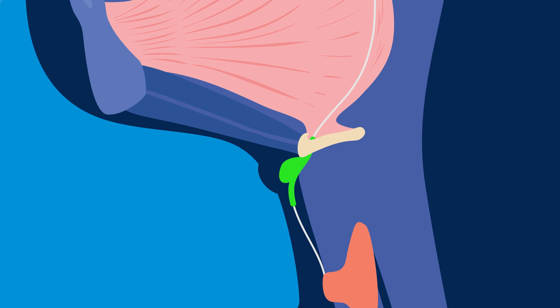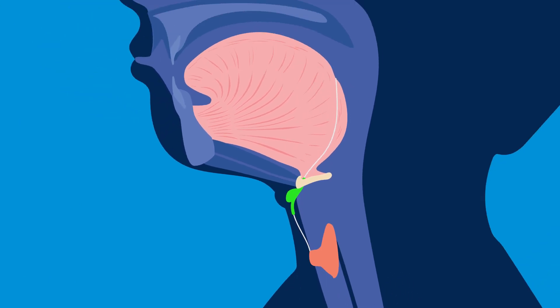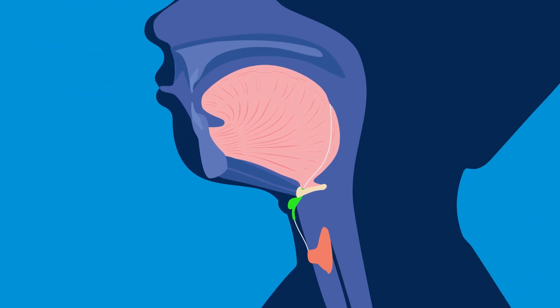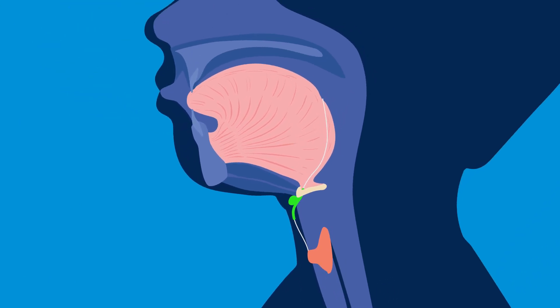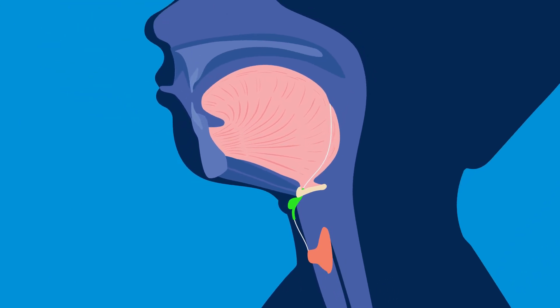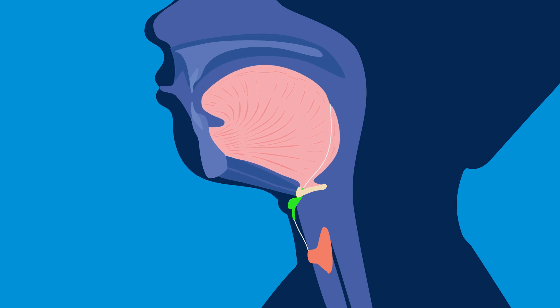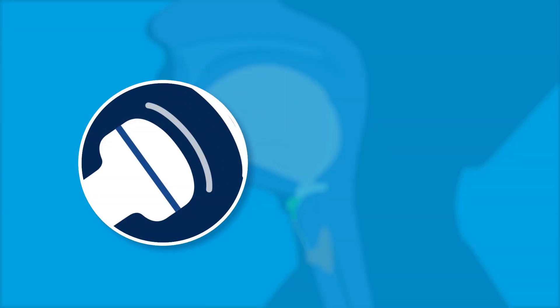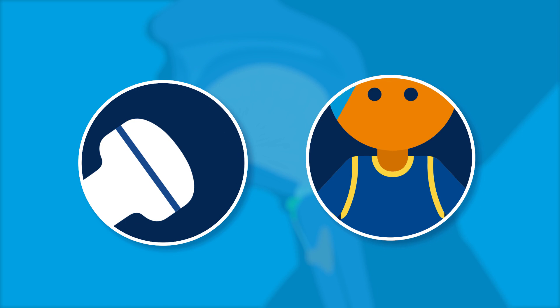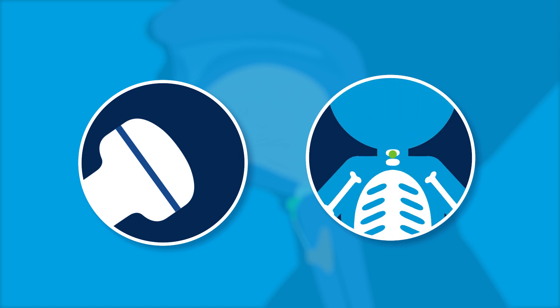Your child's doctor can diagnose a thyroglossal duct cyst by asking them to stick out their tongue, which causes the cyst to move up and down. The diagnosis is confirmed using ultrasound or other imaging methods.